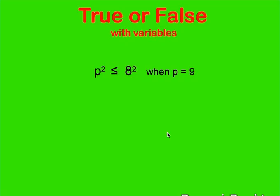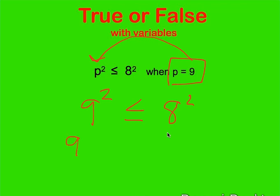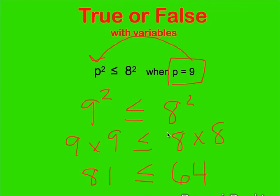Now we're going to try some true or false questions with variables. We'll use the given value for the variable and plug it in. For this one, p squared is less than or equal to 8 squared, with p = 9. So 9 squared is less than or equal to 8 squared, which is 9 times 9 = 81, compared to 8 times 8 = 64. Since 81 is not less than or equal to 64, the answer is false.